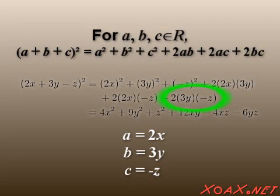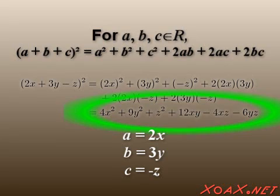Plus 2 times 3y times negative z. This simplifies to 4x squared, plus 9y squared, plus z squared, plus 12xy, minus 4xz, minus 6yz.